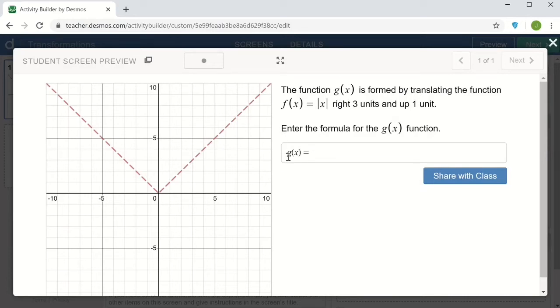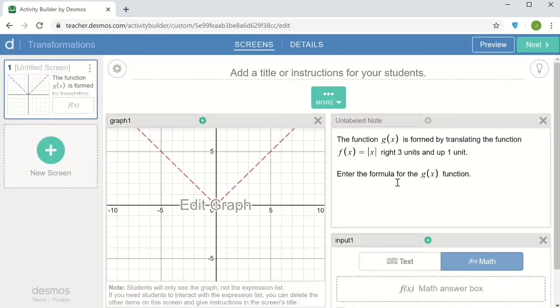But now you might notice that the parentheses around the x in the note for g of x versus in the input statement are a little bit different. We can change that and make them maybe look a little bit better. If we go back to the CL script.